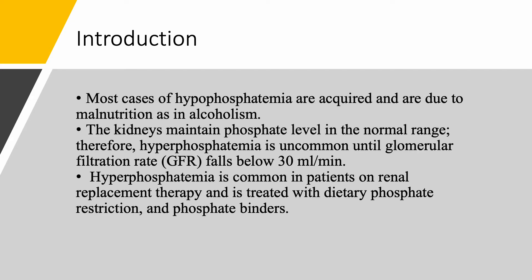Most cases of hyperphosphatemia are acquired and are due to malnutrition, as you would see in alcoholism. The kidneys maintain phosphate level in the normal range. Therefore, we normally don't see hyperphosphatemia unless the glomerular filtration rate is below 30. You need to have stage four or five chronic kidney disease, or someone on dialysis, to see hyperphosphatemia. It is therefore common in patients on renal replacement therapy, whether hemodialysis or peritoneal dialysis. We treat that by restricting phosphate in the diet and using phosphate binders.